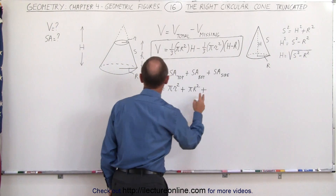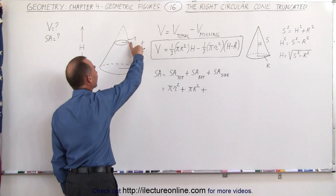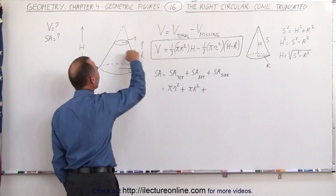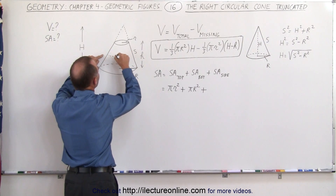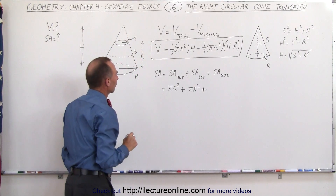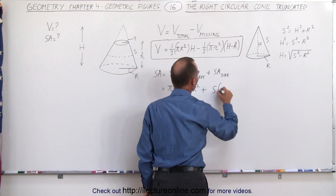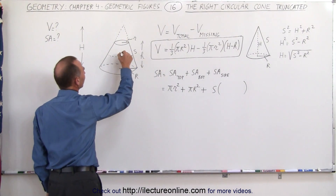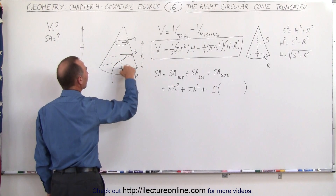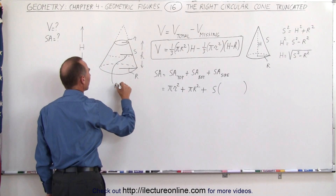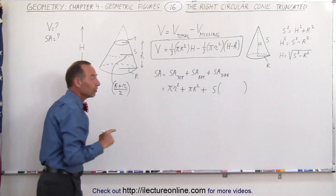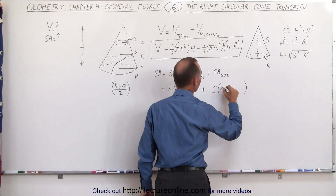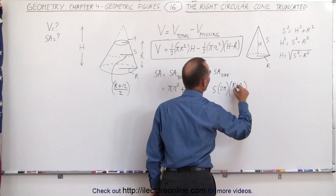We're going to use the same trick as in the previous video. We take the length of the side right here, spin it around, and take the average distance that the side travels — which is the point halfway between the top and the bottom. So that equals the side length multiplied by the average distance covered as it spins around. The radius at that midpoint is the average of big R and little r, which is (R + r) divided by 2. Spinning that around gives us 2 pi times (big R plus little r) over 2.